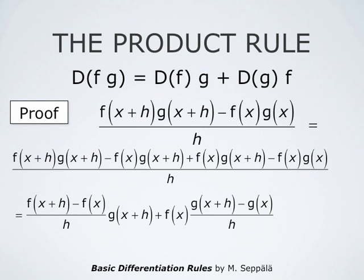As h goes to 0, g(x+h) approaches g(x) because g is assumed to be differentiable, and therefore continuous. The first difference quotient for f, (f(x+h) − f(x))/h, approaches f'(x), and the second difference quotient approaches g'(x). So we conclude that the limit is f'(x)·g(x) + f(x)·g'(x). Therefore, the derivative of a product is the derivative of the first factor times the second factor, plus the derivative of the second factor times the first factor.